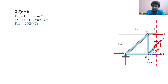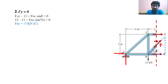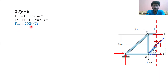We apply the sum of forces in Y equal to zero. We get: F_AY minus 11 kN plus F_BE times sine theta equals zero. The value of theta is 53 degrees. Applying this angle and solving, we get the force in member BE equal to minus 5 kN. The negative sign indicates that the member is in compression.